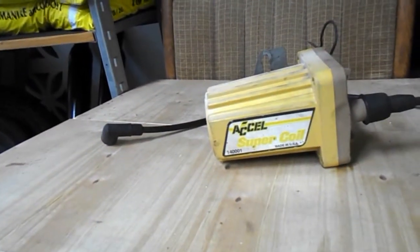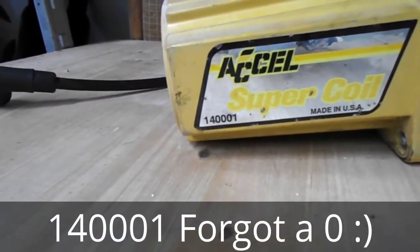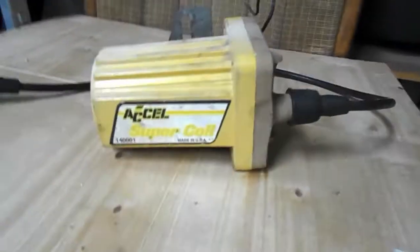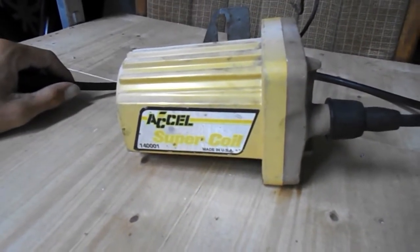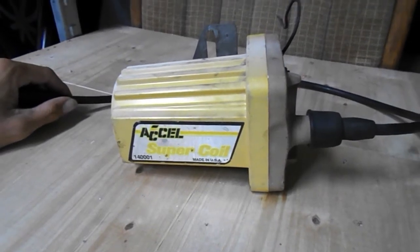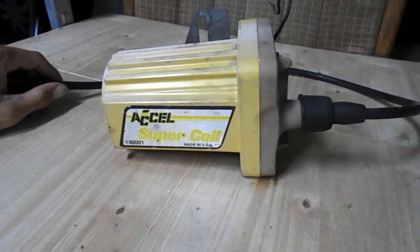What's up everyone, today I'm going to be talking about the ACCEL Super Coil ignition coil, the 14001. I'm going to give you some tips about it, what it's used for, how to wire it up. I currently am not using this. I got this off a car that I bought four or five years ago, haven't touched it and haven't used it, but I'm going to give you a quick simple rundown about it.